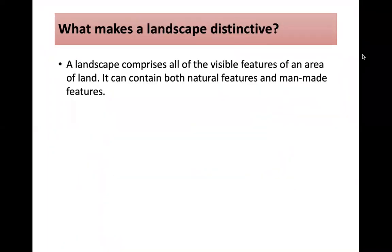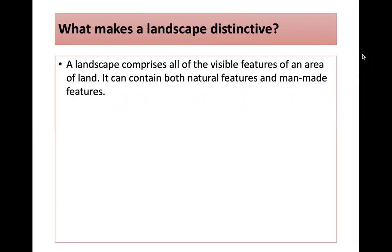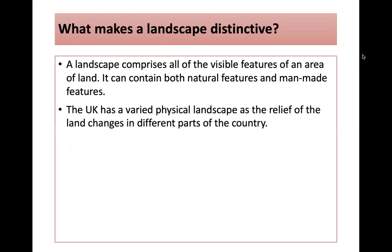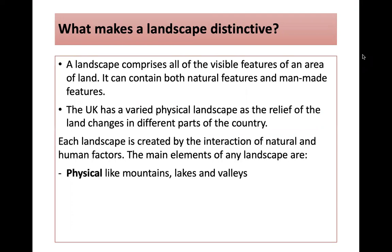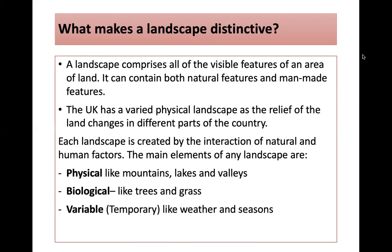What makes a landscape distinctive? It comprises all the visible features of an area of land, containing both natural and man-made features. The UK has a varied physical landscape as the relief of the land changes in different parts of the country. Each landscape is created by the interaction of natural and human factors: physical elements like mountains, lakes and valleys; biological like trees and grass; variable, those temporary characteristics like weather and seasons; and human, like buildings and other land uses.